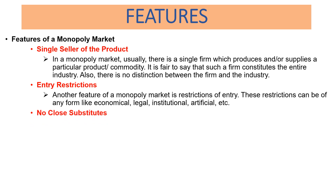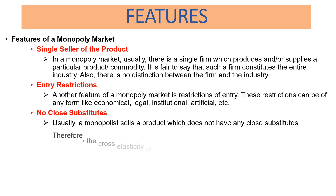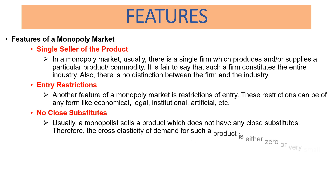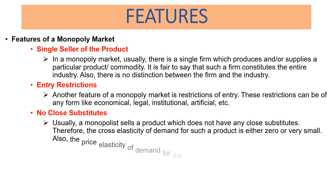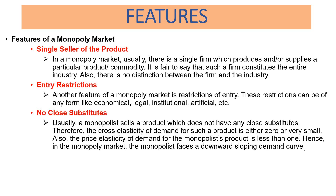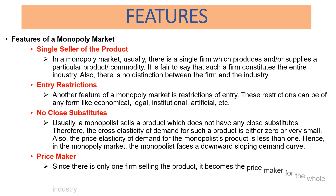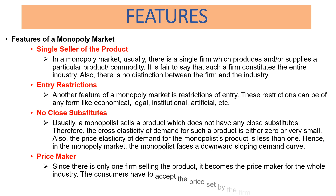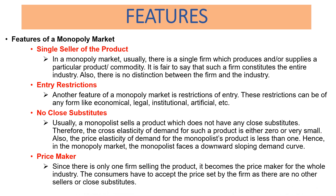The third feature is no close substitutes. Usually a monopolist sells a product which does not have any close substitutes. Therefore, the cross elasticity of demand for such a product is either zero or very small. Also, the price elasticity of demand for the monopolist's product is less than one. Hence, in the monopoly market, the monopolist faces a downward sloping demand curve. The fourth feature is price maker. Since there is only one firm selling the product, it becomes the price maker for the whole industry. The consumers have to accept the price set by the firm as there are no other sellers or close substitutes.